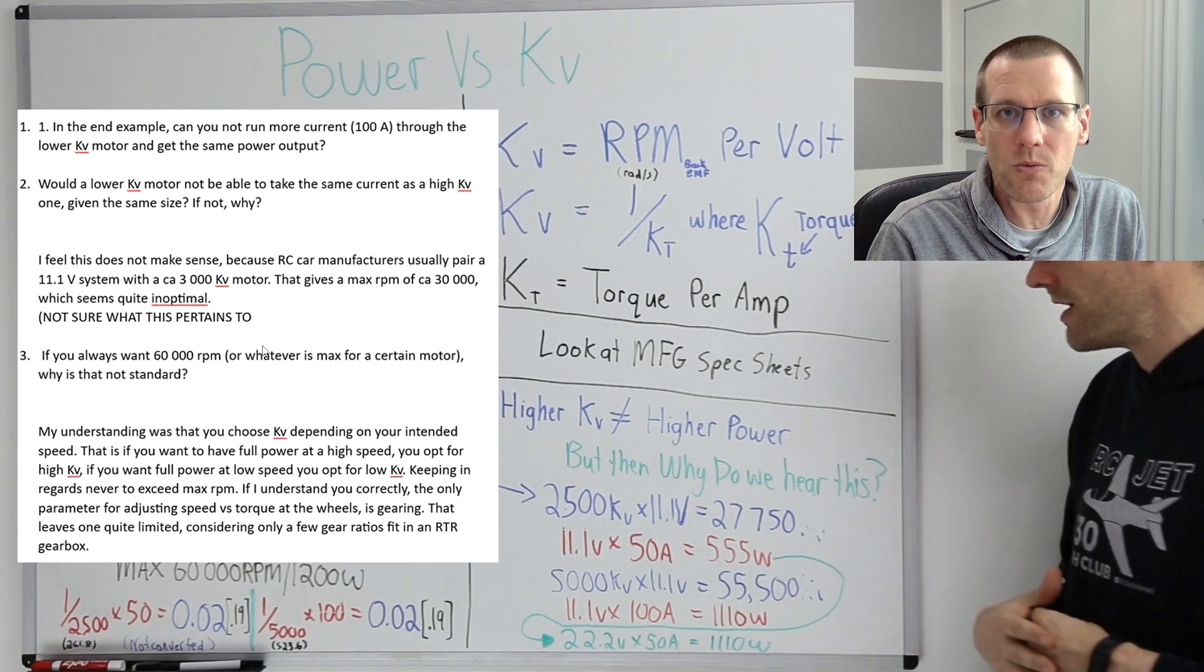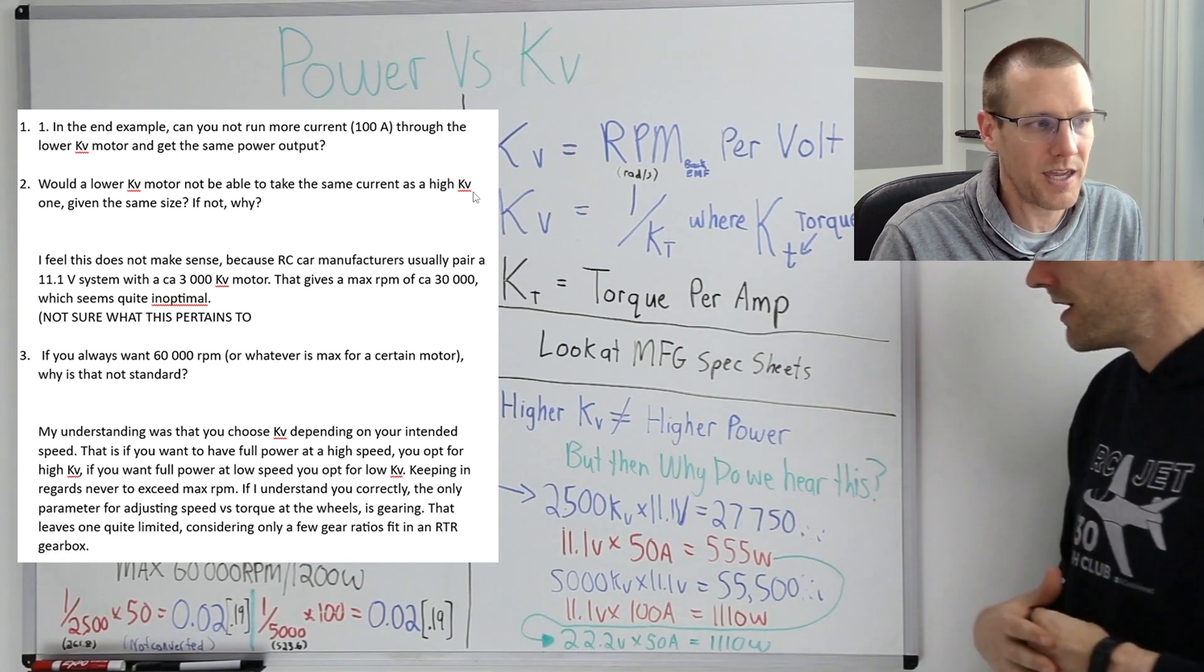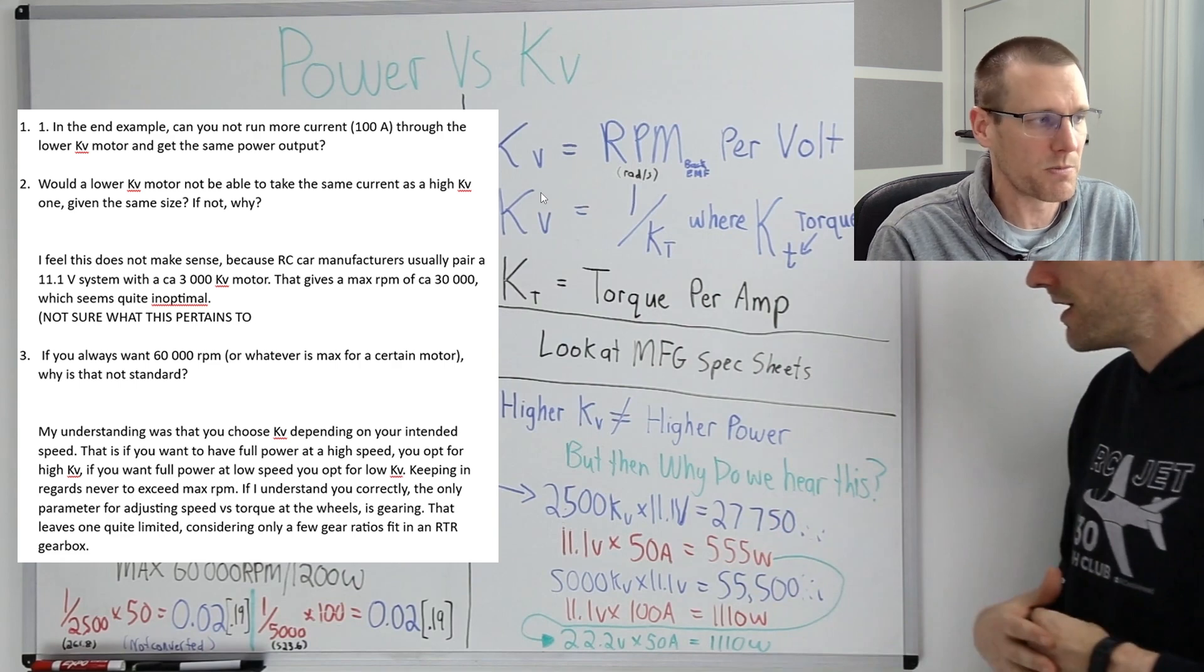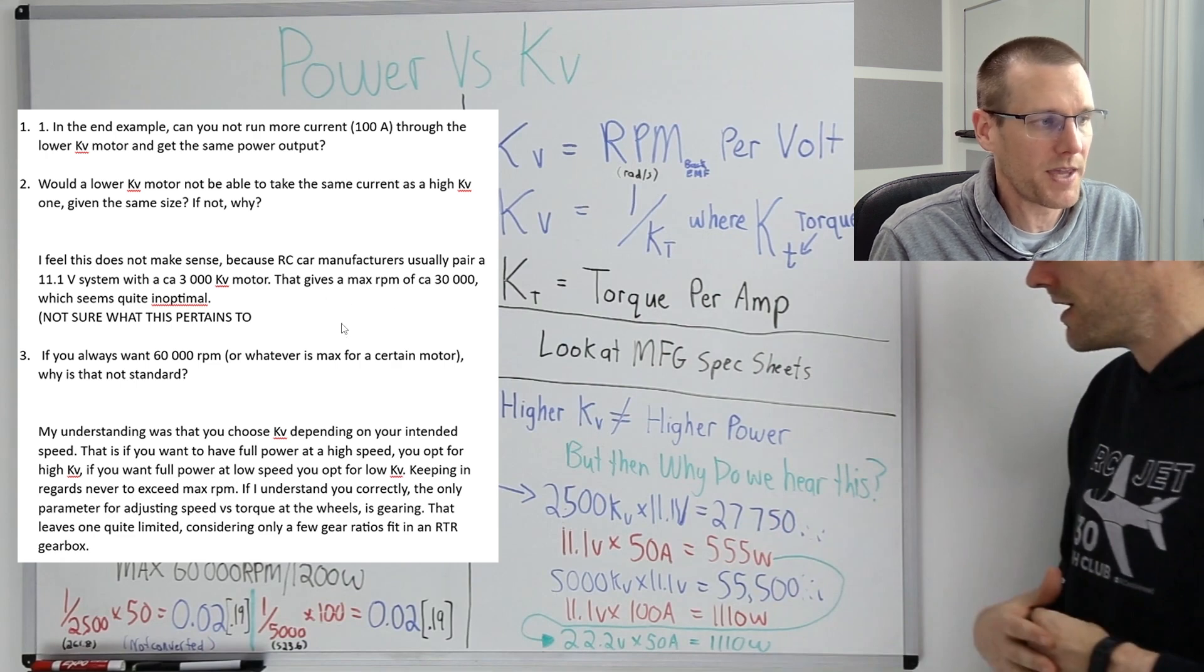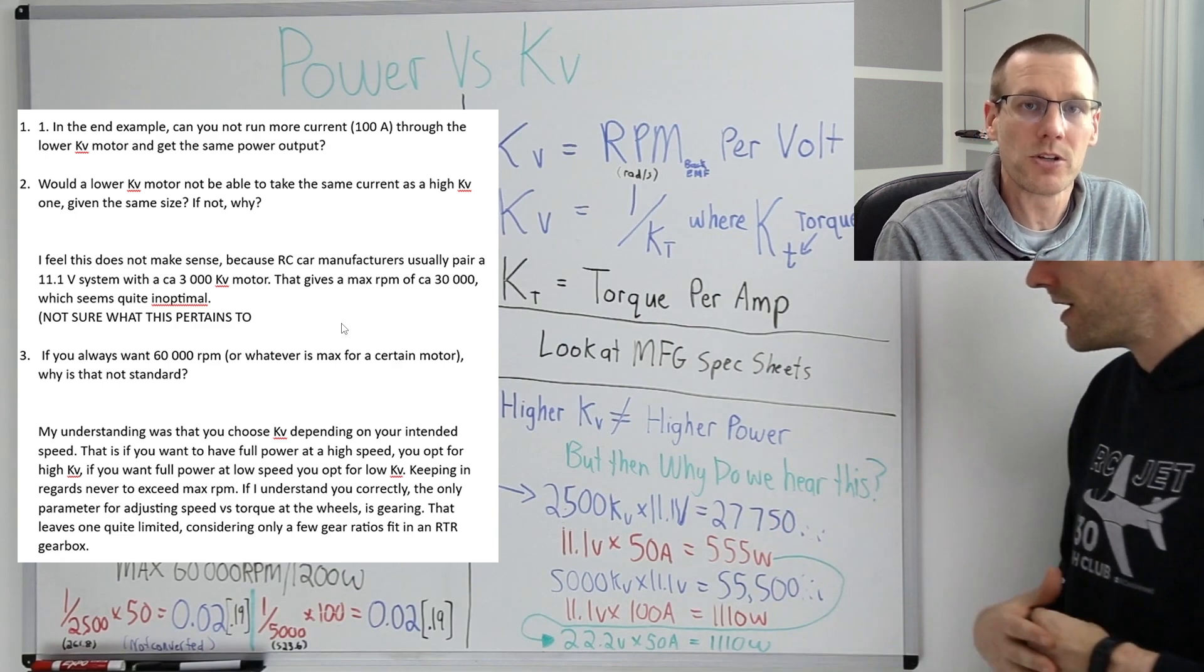Current is what is associated with torque and voltage is what is associated with RPM. And both of these are going to be in combination with the KV and the KT values that we actually explained in this video that I'll link in the description below. So this is definitely not optimized because we know that if this motor has a maximum RPM in this example as 30,000, but it is capable of 40 or 50 or 60,000 RPM, there's a lot of potential that we're losing.